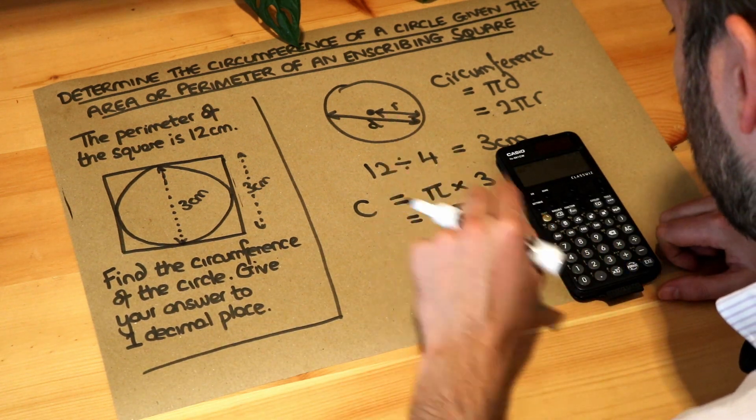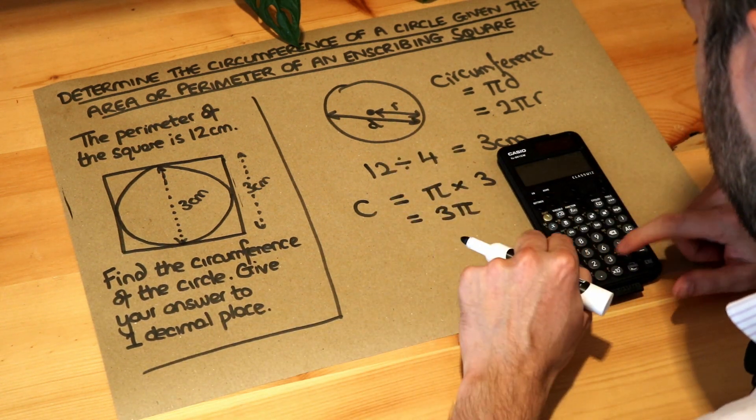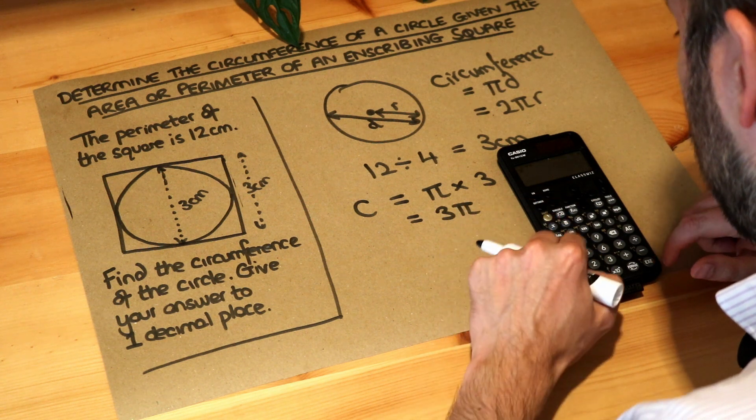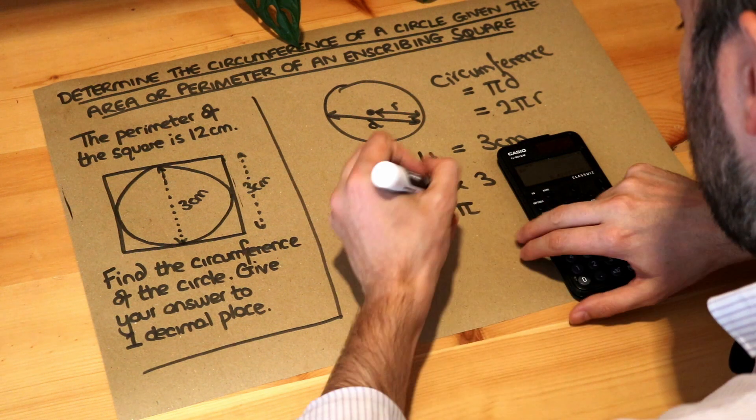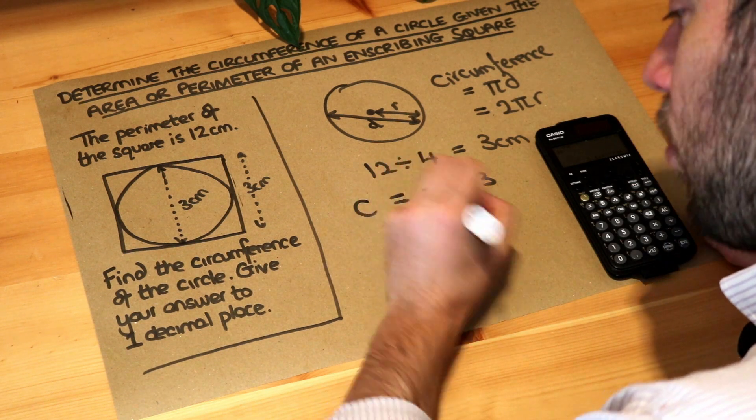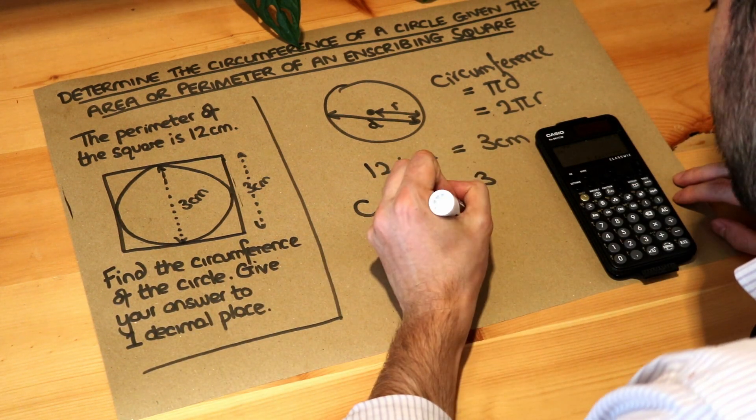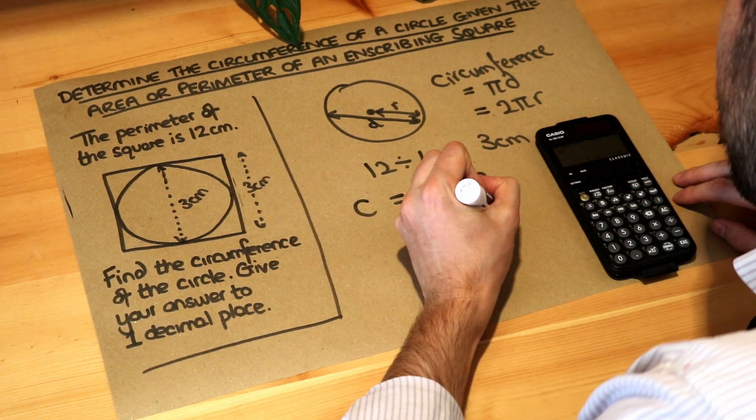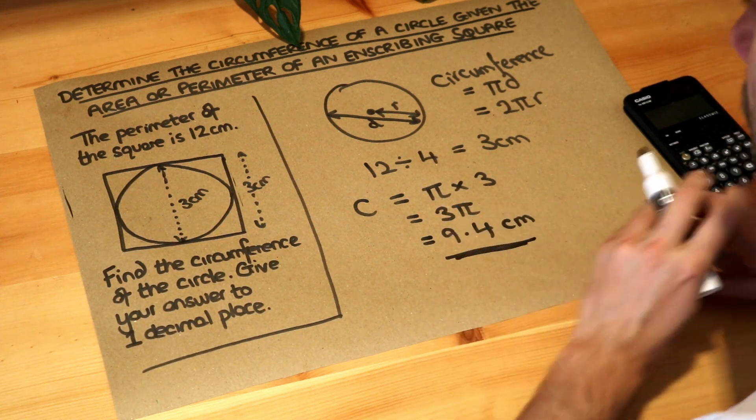We do 3 times π, so 3 shift π and then equals, and that gives me nine point, at one decimal place, 9.4, and the unit is centimeters. That is the final answer.